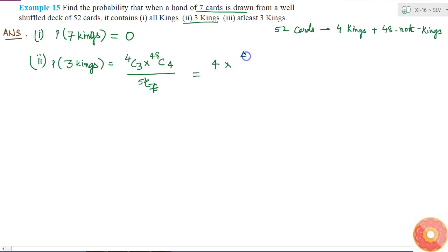Multiplied by 48C4 is 48 into 47 into 46 into 45 divided by 4 into 3 into 2 into 1, divided by 52C7 which is equal to 52 into 51 into 50 into 49 into 48 into 47 into 46.